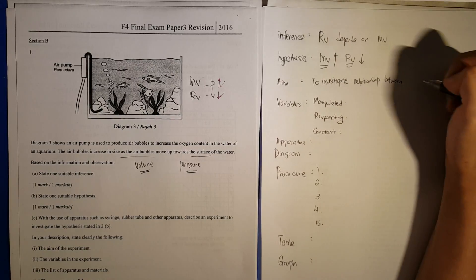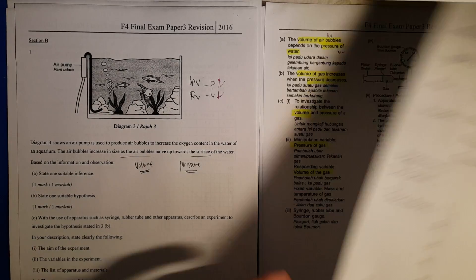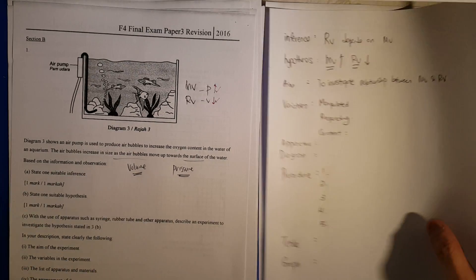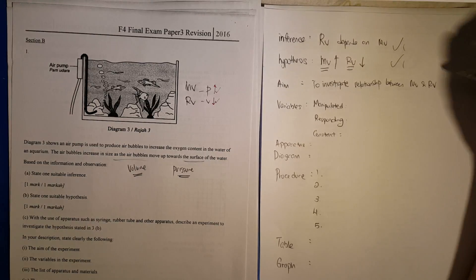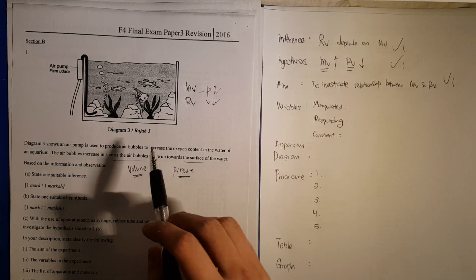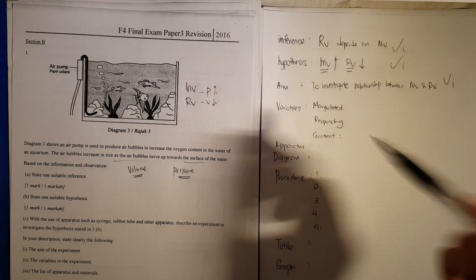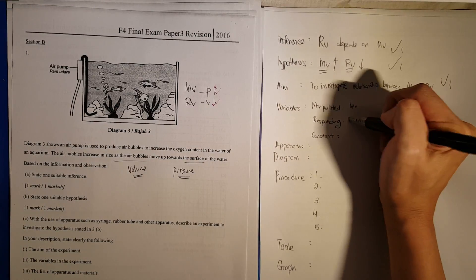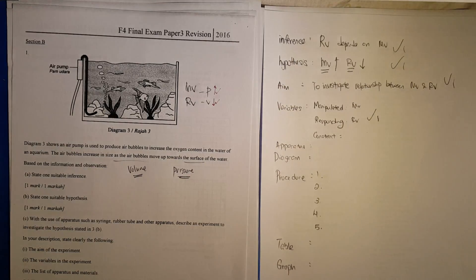It's always the same: to investigate the relationship between a manipulated variable and a responding variable. It's actually very simple. If you do this correctly, you will get one mark, one mark, one mark just by stating the variables. You get three marks, and it doesn't stop there — getting your manipulated variable and responding variable correct gives you an additional mark, so that's four marks.